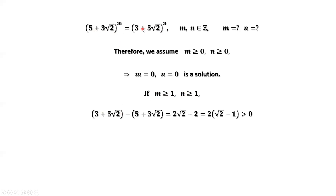Comparing the two bases, 3 + 5√2 and 5 + 3√2: consider their difference. Simplifying, since √2 > 1, the difference is positive, which means 3 + 5√2 is bigger than 5 + 3√2. Since the base on the right is bigger, the power n should be smaller, and the base on the left is smaller so the power m should be bigger. Otherwise, the equality cannot hold. This implies m > n.